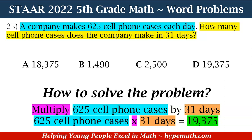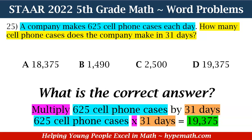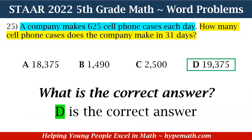Now that we have that answer, what is the correct answer choice? All I need to do is look at my answer choices to see which one shows 19,375 as the answer. And yes, it is D. D is the correct answer for how many cell phone cases the company made in 31 days.